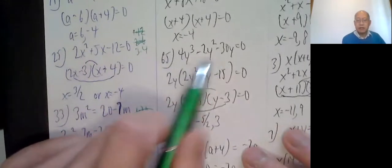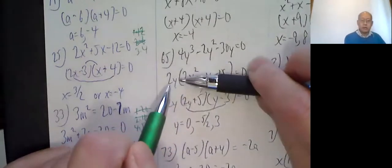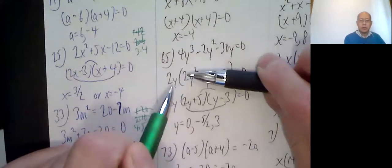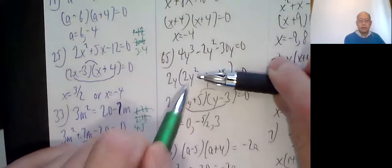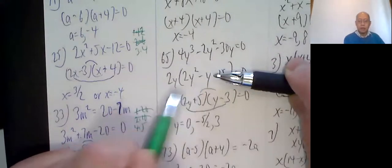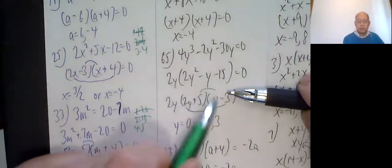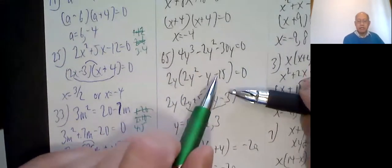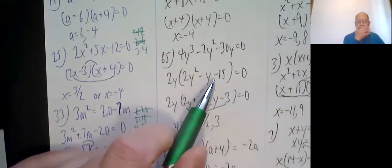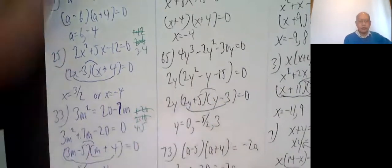Number 65: greatest common factor is 2y, and then left behind is, you say what do you multiply this by to get that. 2 times 2y times y squared. How do you go from there to there? Negative y. From there to there? Negative 15. Minus means the signs are opposite. 2y squared has to be y and y. 15 is probably going to be 5 and 3. It is. You can check with FOIL.